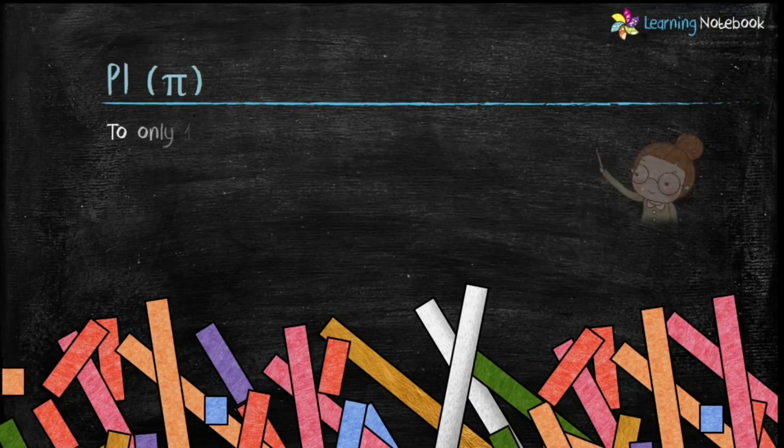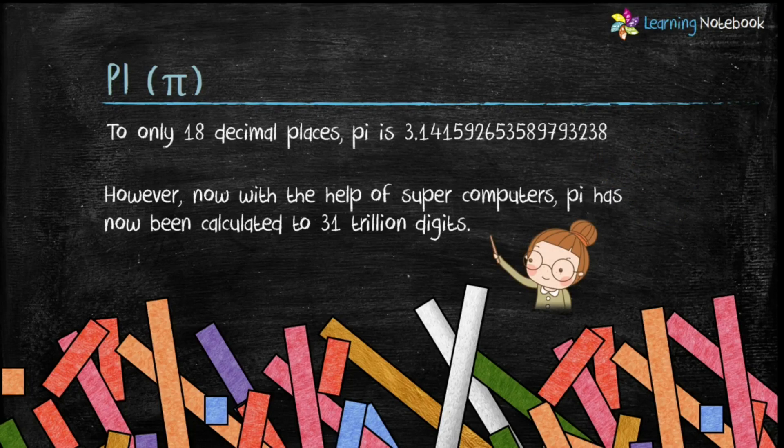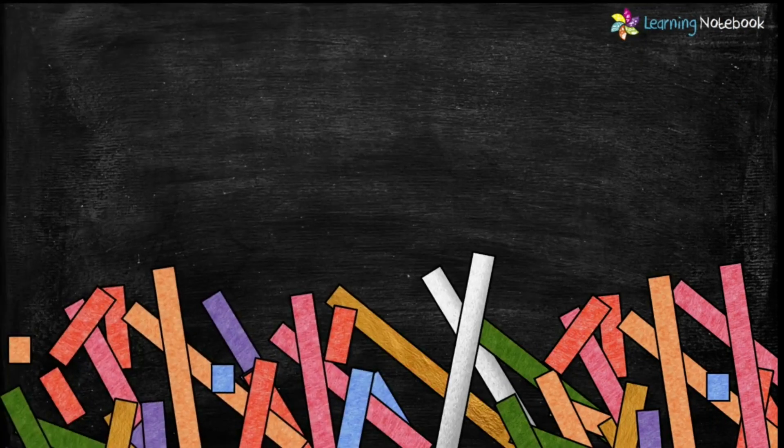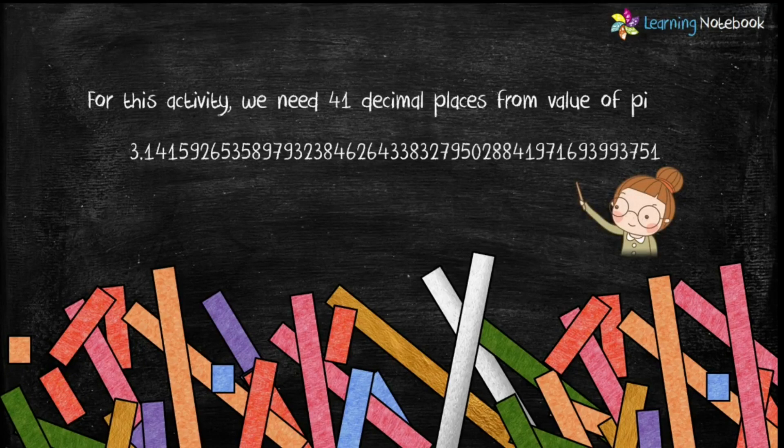Students, you can see the value of pi here up to 18 decimal places, but now with the help of supercomputers pi has been calculated to 31 trillion digits. Students, for this activity we need 41 decimal places from the value of pi as shown here.